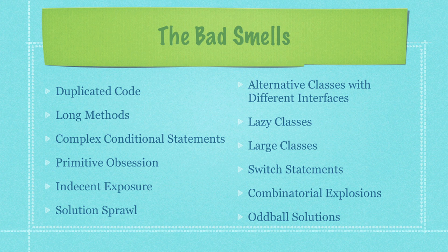Alternative classes with different interfaces occurs when interfaces of different classes differ but the classes themselves are not different — better to refactor those into one. Lazy classes are classes that should be consolidated because they don't do much on their own. Large classes occur when you move too much into one class, giving it too many responsibilities — a sign is using many instances of that one class throughout your code to solve many different problems. Switch or if-then-else statements should be eliminated if they make your system restrictive, replaced with an object polymorphic solution.